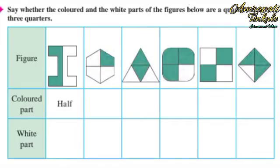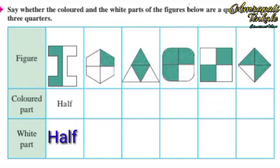Next activity: say whether the colored and the white parts of the figures below are a quarter, a half, or three quarters. In the first figure, the colored part is half and the white part is also half.